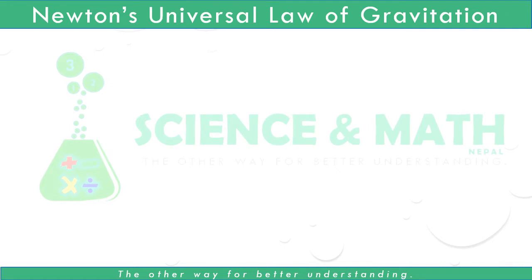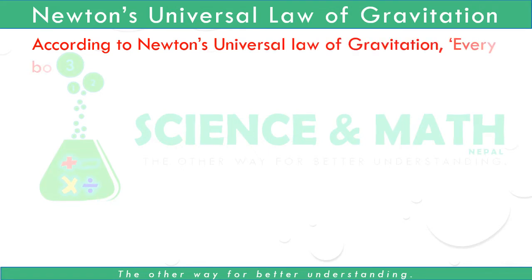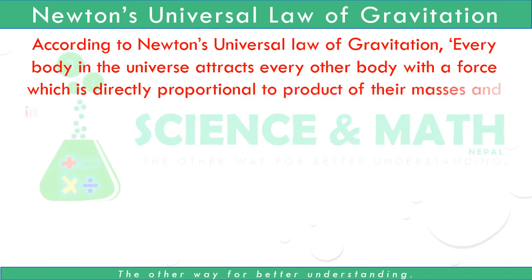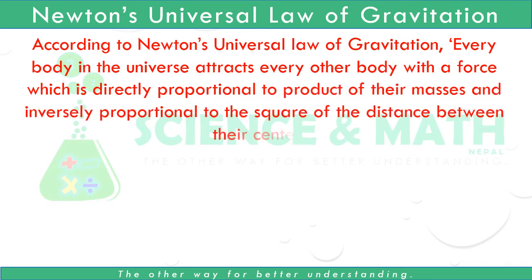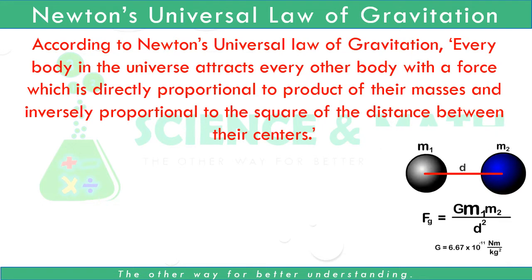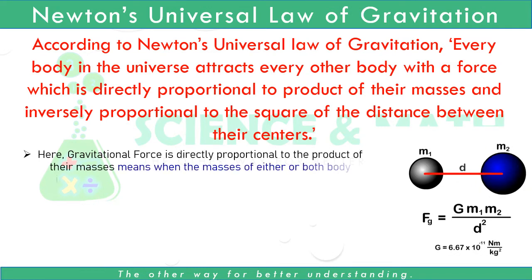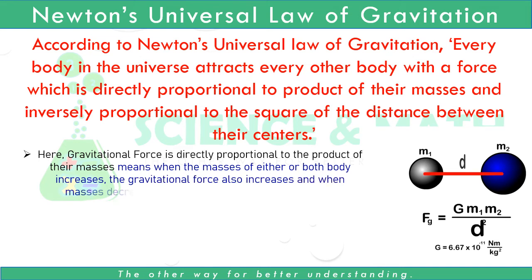What does Newton's Universal Law of Gravitation state? According to Newton's Universal Law of Gravitation, every body in the universe attracts every other body with a force which is directly proportional to the product of their masses and inversely proportional to the square of the distance between their centers. This means when the masses of either body or both bodies increase, the gravitational force also increases.